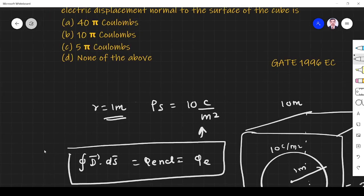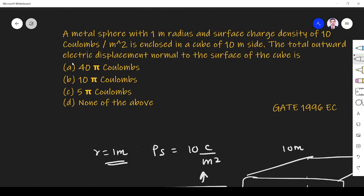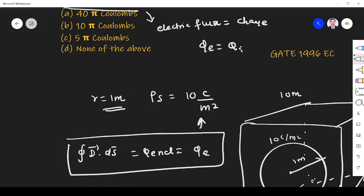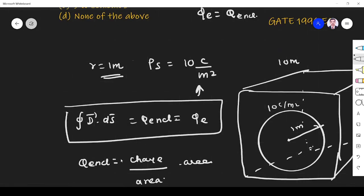What they're asking for is the total outward displacement. Total outward electrical displacement is nothing but electric flux. As per Gauss law, the flux passing through any surface equals the charge enclosed. That is Q enclosed, and 'enclosed' is very important.